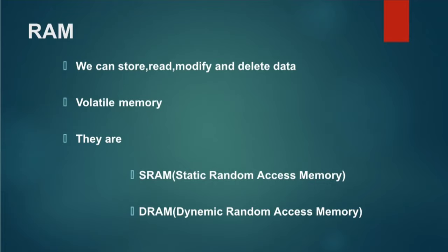RAM is volatile because when the power goes off, it loses the stored information. RAM is classified into two types: SRAM (Static Random Access Memory) and DRAM (Dynamic Random Access Memory). The information stored in SRAM is not refreshed; it remains as long as power supply is provided. SRAM is faster and more reliable than DRAM. The information stored in DRAM is refreshed after every few milliseconds, and DRAM has higher storage capacity than SRAM.